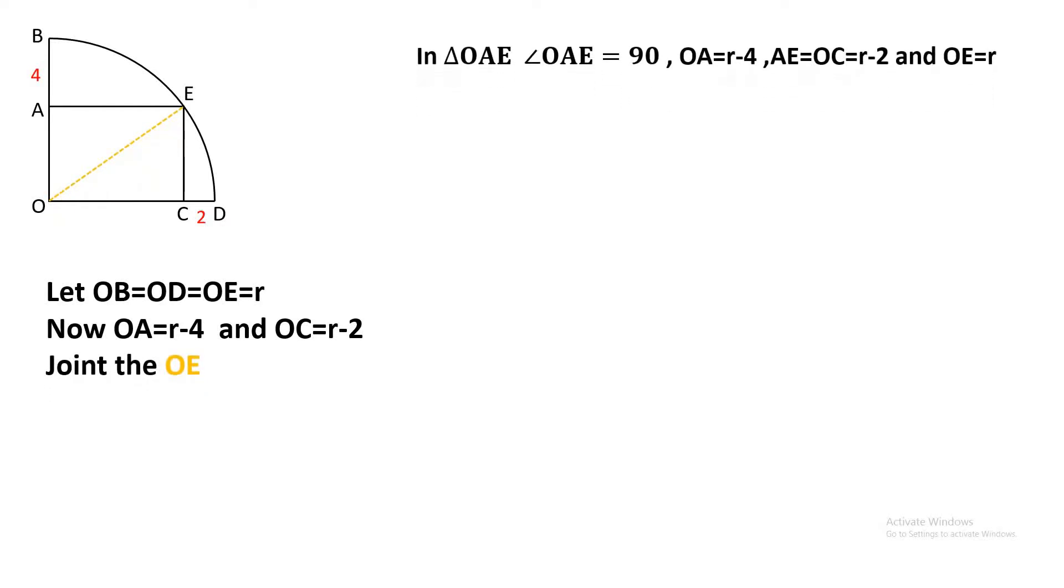In triangle OAE, angle OAE equals 90 degrees, OA equals r minus 4, AE equals OC equals r minus 2, and OE equals r. According to Pythagorean theorem, OA² plus AE² equals OE².